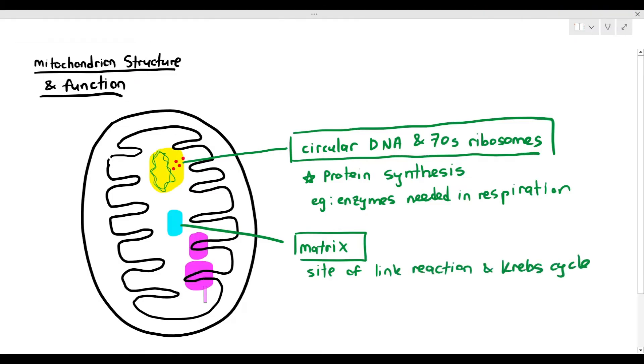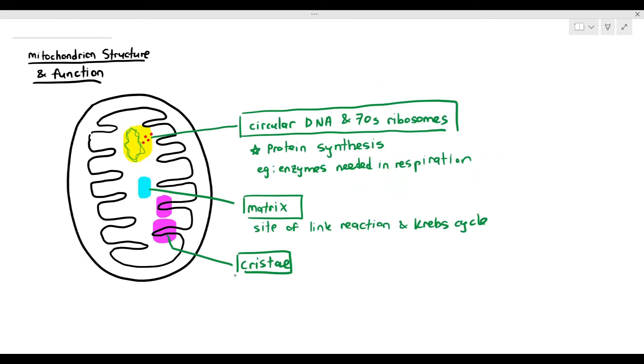And the third part, which I've highlighted in a pink area here, these finger-like structures are known as the cristae. And the cristae are the folded regions of the inner membrane. In biology, when something is folded, it's usually to increase the surface area. But to increase the surface area of what exactly?